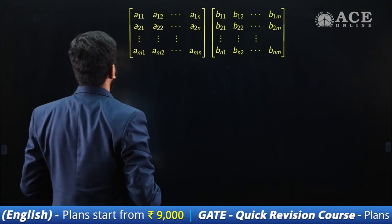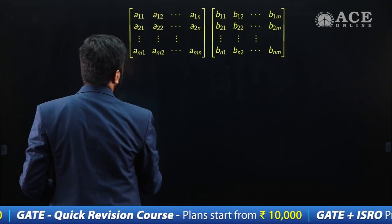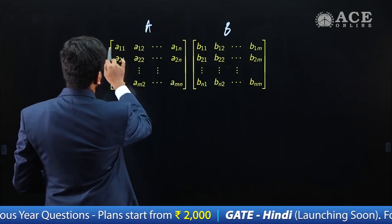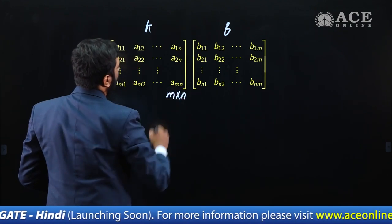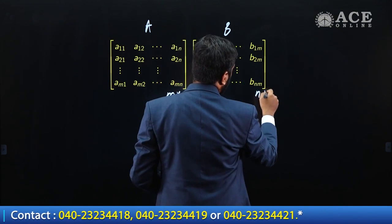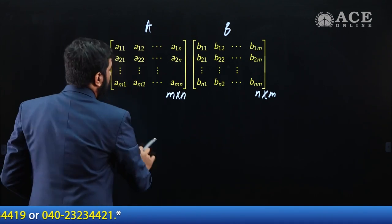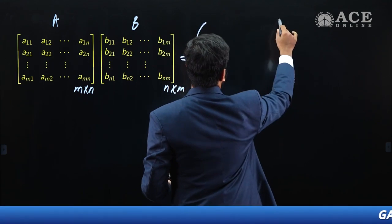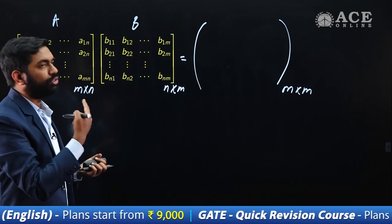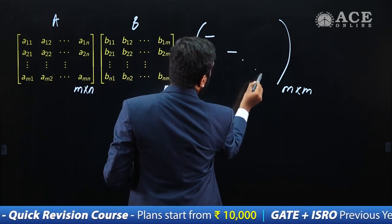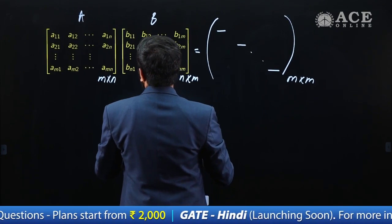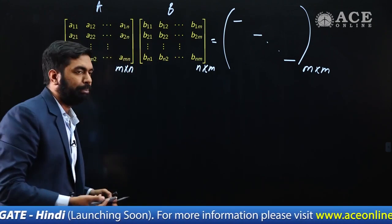I have matrix A of order M×N — M rows and N columns — and matrix B of order N×M. When you find AB, you get a matrix of order M×M. You need to find the trace of this matrix, which involves all the principal diagonal elements. If you solve statement 1, statement 2 is just a special case of it. To get the first diagonal element of AB, multiply the first row of A with the first column of B.